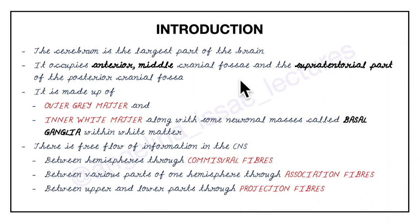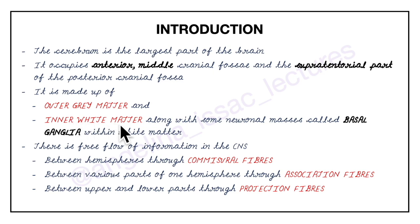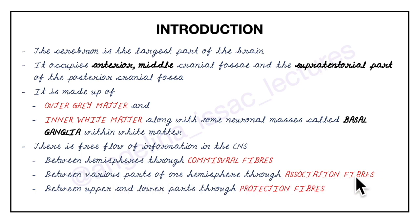To summarize the introduction to the cerebrum: the cerebrum is the largest part of the brain, occupying the anterior, middle cranial fossa and the supratentorial part of the posterior cranial fossa. It is made up of outer grey matter and inner white matter, along with neuronal masses called the basal ganglia within the white matter. There is free flow of information through commissural fibers, association fibers, and projection fibers.